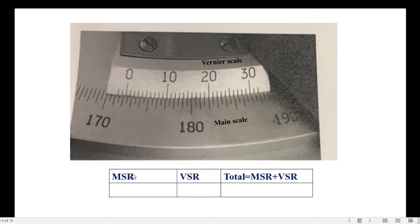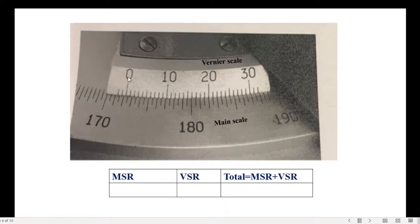Let us start with the main scale reading. To get the main scale reading, see where the zero of the vernier scale coincides with a line on the main scale — that gives the main scale reading.